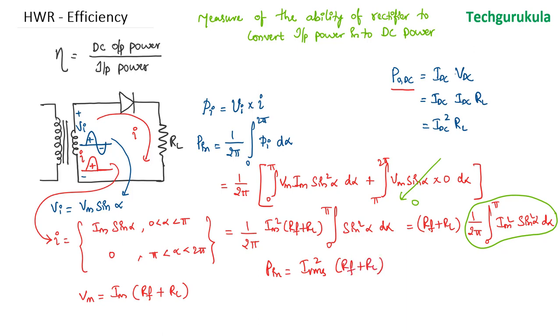Now the overall efficiency that we have here is equal to the DC output power, which we found here, that is I_DC square times R_L over the input power, which is given here, that is I_RMS square times R_f plus R_L.